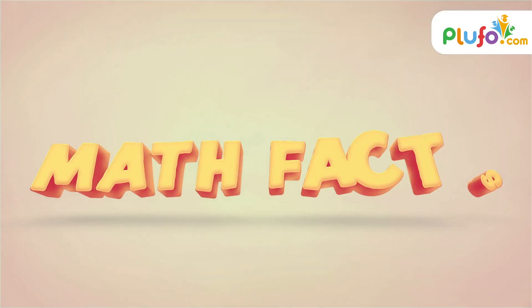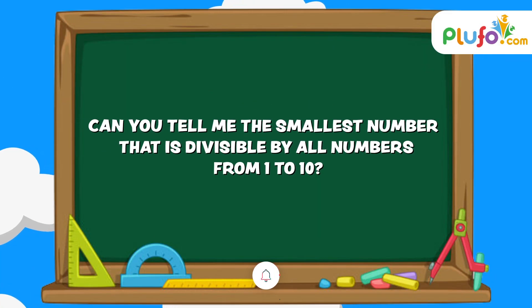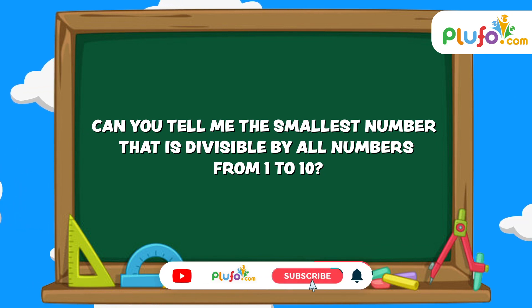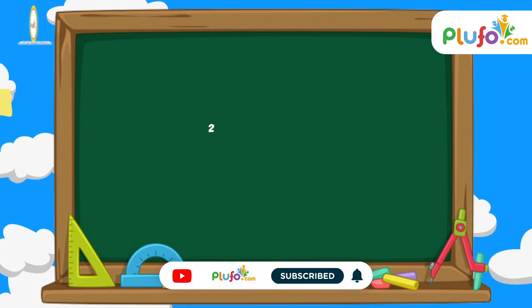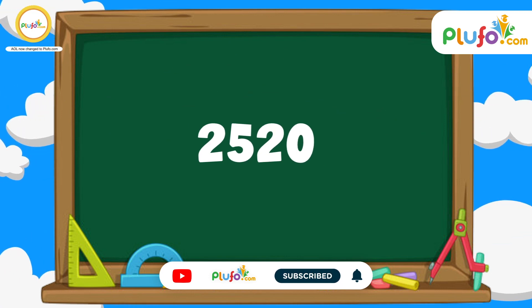Hello everyone, welcome back! Today let's discuss some interesting math facts. Can you tell me the smallest number that is divisible by all numbers from 1 to 10? Well, it is 2520.